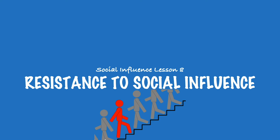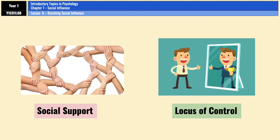Hello everyone and welcome back to A-Level Psychology. This is Social Influence Lesson 8, Resistance to Social Influence. In the first part of the video we're going to look at social support and the locus of control, both explanations for resistance to social influence. Then we'll look at a six-mark outline so you can see how it would all come together in an essay or extended writing answer. In the second half we'll look at evaluation points and some exam questions.